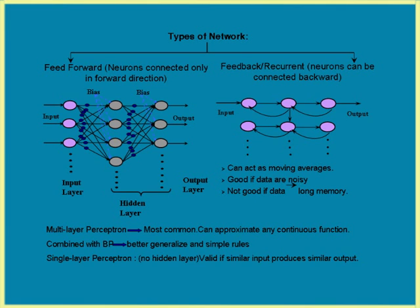This kind of input combination and processing is also called processing by a perceptron. There are two types of network architecture — feed forward architecture and feedback or recurrent architecture. Recurrent architectures involve connections not only in the forward direction but also in the backward or lateral direction, with the advantage that they can act as moving averages if the data are too noisy. In a feed forward network there is an output layer from where we take out the output; there may be more than one hidden neuron layer, though mathematically it has been established that two hidden layers are sufficient. This feed forward architecture is also called multilayer perceptron.